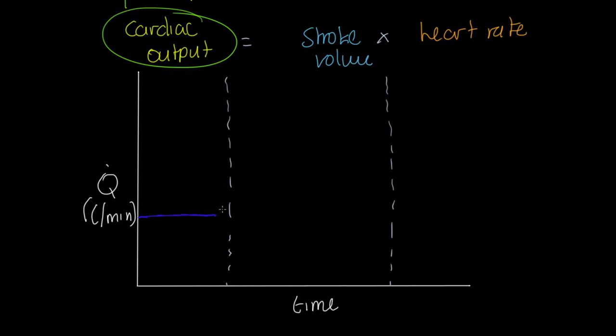Resting cardiac output is roughly five liters per minute for most people. Both a trained and untrained athlete will have the same resting cardiac output, so let's say that's five liters per minute here.